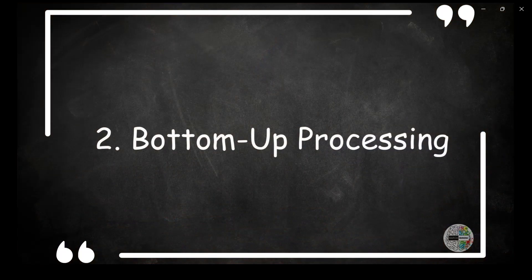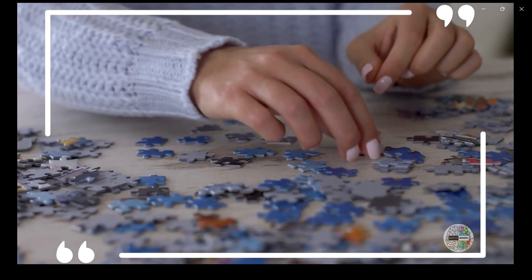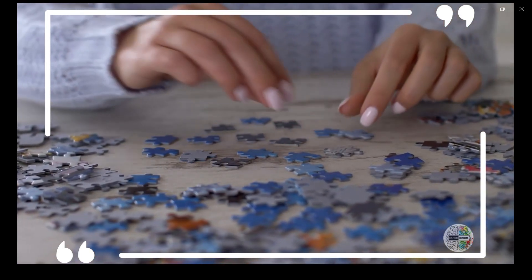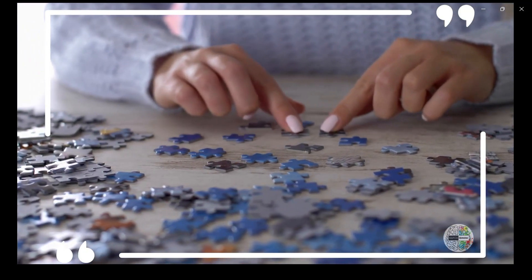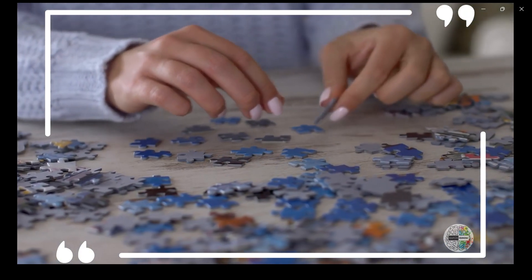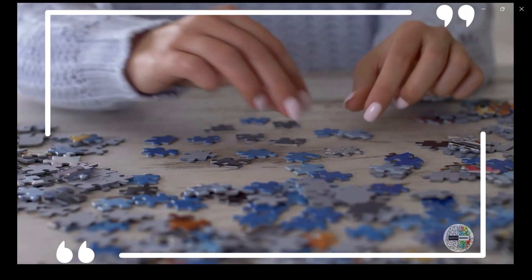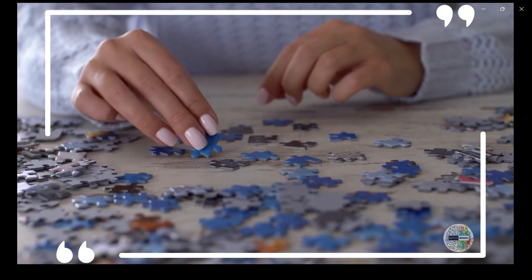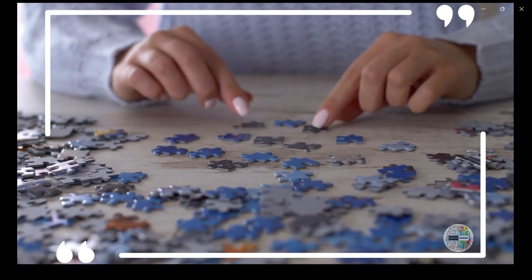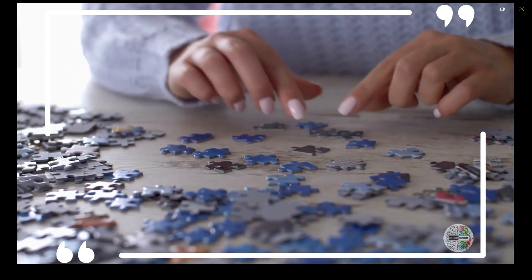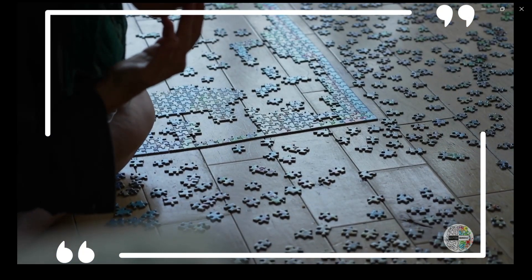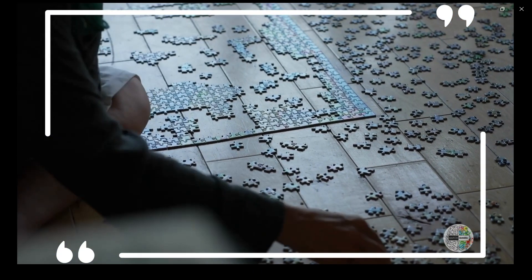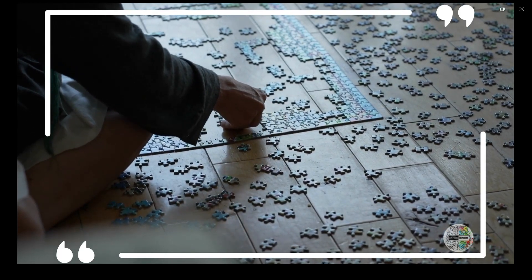Now, bottom-up processing. Think of a jigsaw puzzle with pieces that are mixed up and you don't know what the final picture should look like. With bottom-up processing, you start by looking at the individual puzzle pieces and together piecing them to figure out the whole picture. In perception, this means your brain relies on the raw sensory information it receives from your senses like your eyes or ears and builds understanding from there.